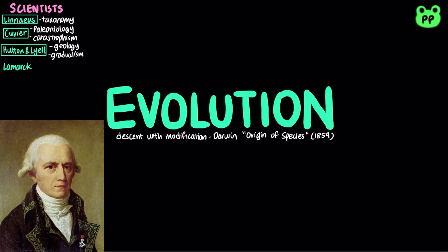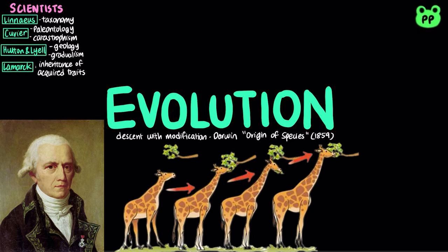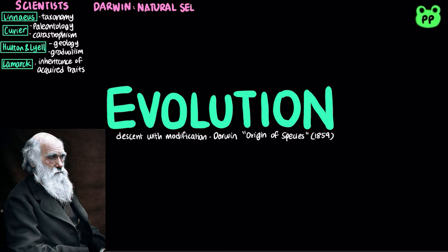Lamarck hypothesized that species evolved through use and disuse of body parts, and the inheritance of acquired characteristics. For example, during its lifetime, a giraffe will elongate its neck to reach higher leaves. This acquired trait is then passed down to its offspring, explaining the evolution of giraffe's neck. However, this theory of evolution is later disproven by Darwin's theory of natural selection.